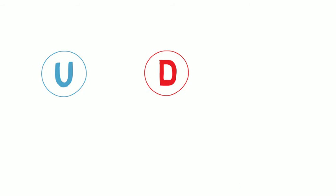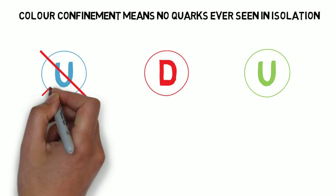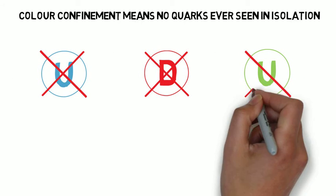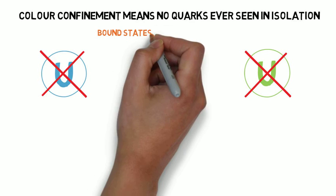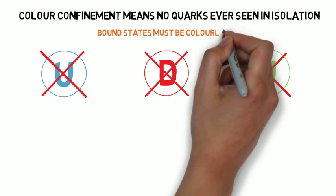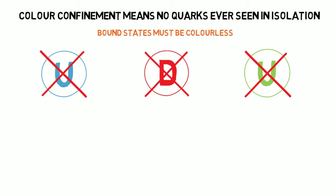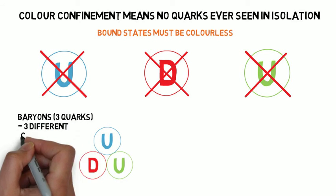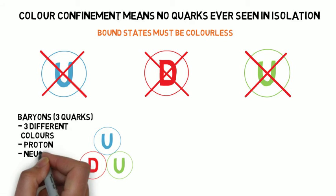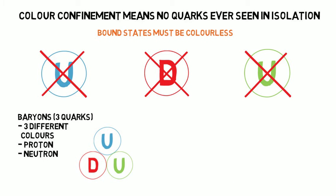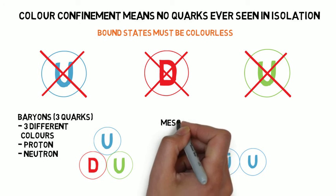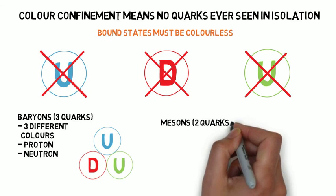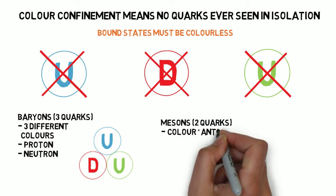So what is colour confinement? Though we seem to know so much about the quarks, the truth is we've never seen one in isolation. Colour confinement dictates that quarks must be bound together in groups, and that these groups — just as white light is made up of all the colours of the spectrum — must be colourless. There are therefore just two possibilities: either three quarks of a different colour combine to form something called a baryon, which includes a proton or neutron, or two quarks made up of a colour and anti-colour pair can bind to form a meson. Both bound states are collectively referred to as hadrons.